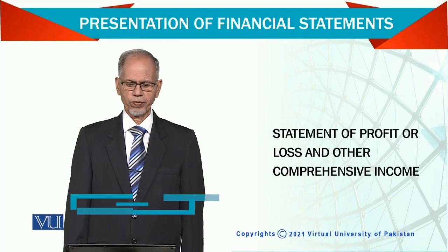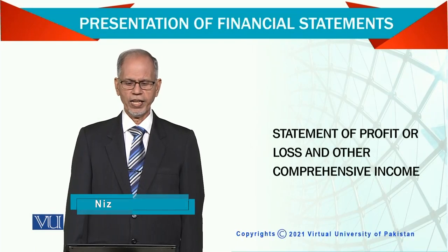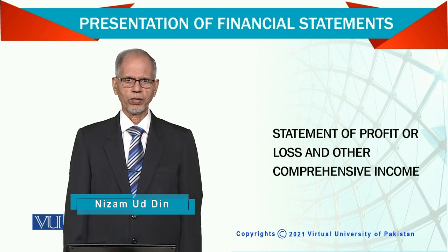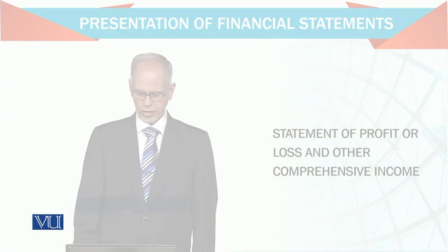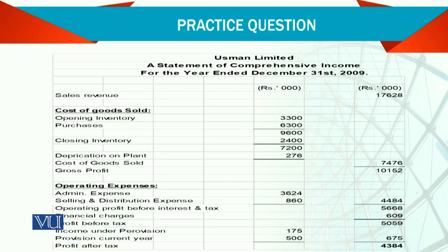Statement of Profit and Loss and Other Comprehensive Income. We need to prepare this statement first. We need to prepare a statement of comprehensive income and three important things are noted: the company name, the statement name, and the period it covers. Similarly, the numbers are in thousands.